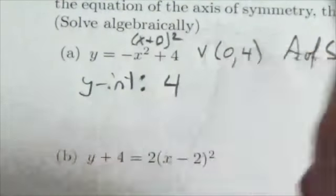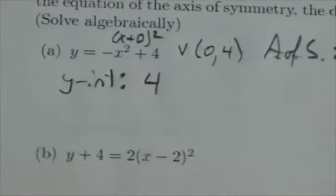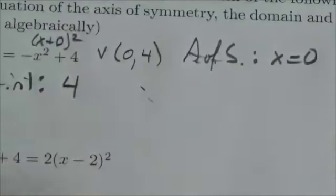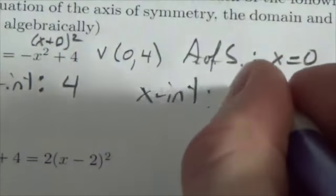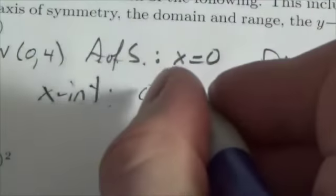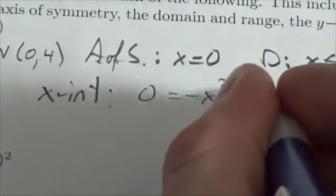The x-intercept, on the other hand, could take a little bit of effort here. Now, in this case, it's not going to take too much effort, but the x-intercept will occur where the y-coordinate - the dependent variable - is equal to 0, so that's negative x-squared plus 4.